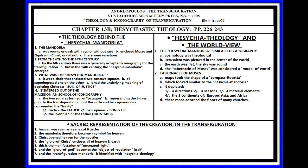So what was this Hesychia Mandala? It was a large circle that enclosed two concave squares, each one superimposed on the other. It had an underlying theological meaning of depicting Christ as the Son of Justice. It also had the underlying meaning of the circle representing the Father that enclosed the Son and the Holy Spirit — so it had a meaning of Trinity as well.